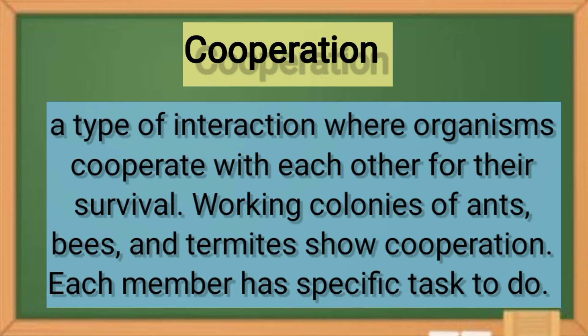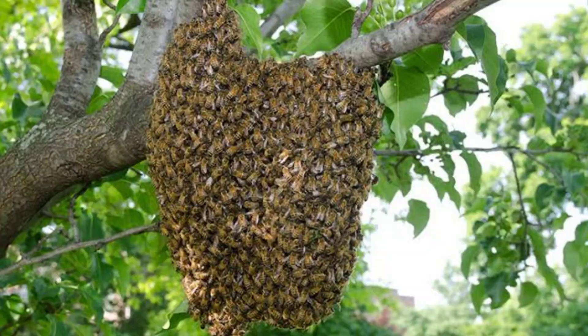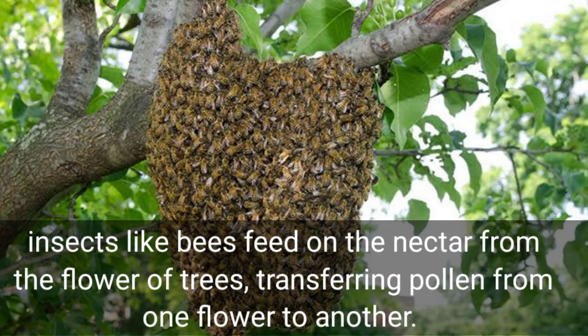Next is cooperation, a type of interaction where organisms cooperate with each other for their survival. Working colonies of ants, bees, and termites show cooperation — each member has a specific task to do. Insects like bees feed on the nectar from the flowers of trees, transferring pollen from one flower to another.